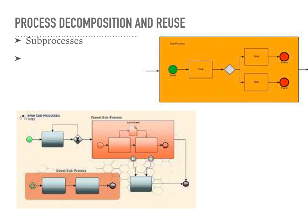Global subprocesses have three main characteristics. First, reusability — global subprocesses are created with the intention of being reused in multiple process models, capturing a specific set of activities or logic commonly used across different processes. Second, a separate and distinct definition — global subprocesses have their own separate BPMN diagrams that define the activities and flows within the subprocess, and these subprocess diagrams can be maintained independently of the main process models. Third, invocation — in process models where the global subprocess is needed, it can be referenced and invoked as a reusable unit, similar to calling a function or method in programming.